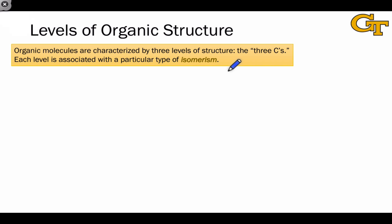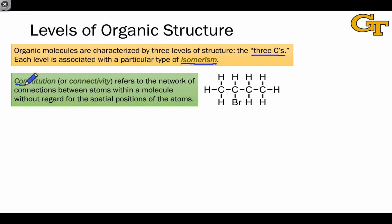To help put these types of motions into context, it helps to consider different levels of organic structure. We think about organic structure at three levels that I refer to as the three C's of organic structure. Each level is associated with a particular type of isomerism — the idea that two molecules can share some structural properties but have differences as well. The broadest level is what's termed the constitution or the connectivity of a molecule, which refers to how the atoms are connected to each other without regard for their spatial positions.